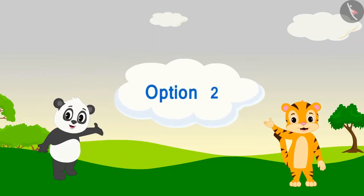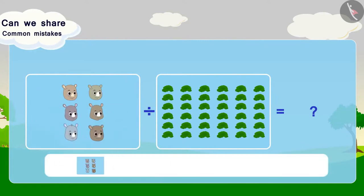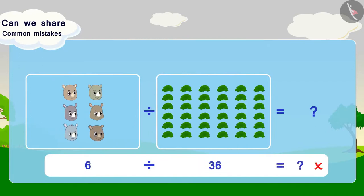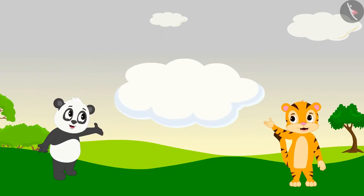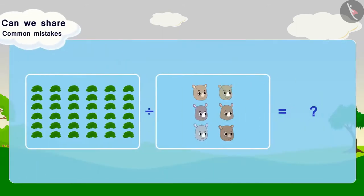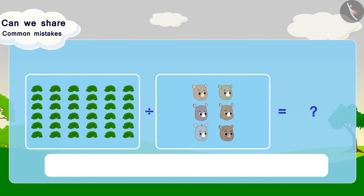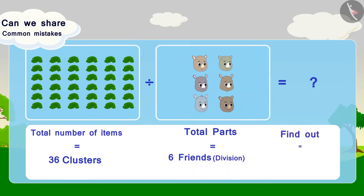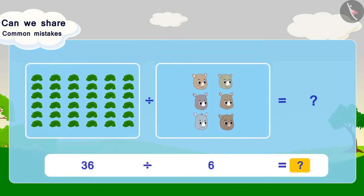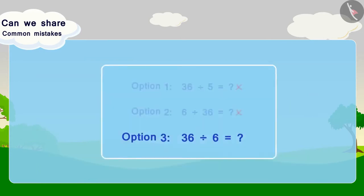Now let us look at option 2. In this option, 6 friends are being divided into 36 grass clusters, which is wrong according to the question. This option is incorrect — this is a very common mistake when performing division. Now let us look at option 3: 36 clusters divided among 6 friends equals how many clusters per friend? In this option, we have correctly divided 36 clusters among 6 friends, so it is the right option.